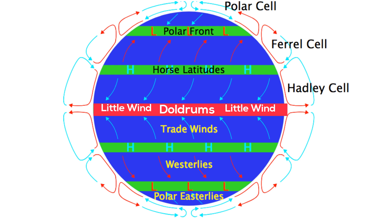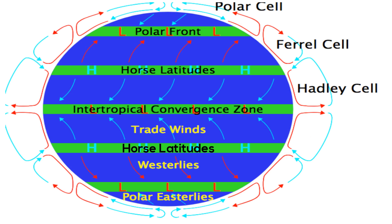Finally, the horse latitudes are located at about 30 degrees north and 30 degrees south. Sinking air creates an area of high pressure, and as a result the winds at these locations are weak.